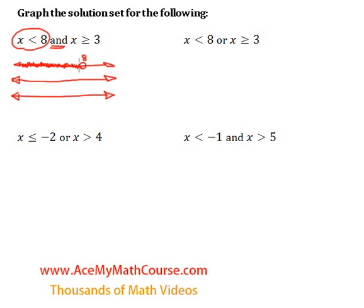Because x can be anything smaller — like 7, 0, negative 10, whatever. And x is greater or equal to 3, so I'll graph this on the second line. Put in the 3 — that's going to be a closed dot, because we're including it. x is greater or equal to 3, so we highlight this area to the right of 3.